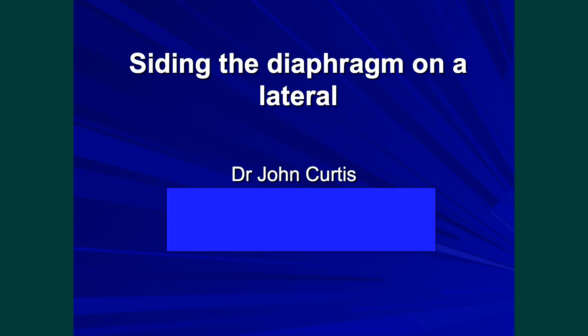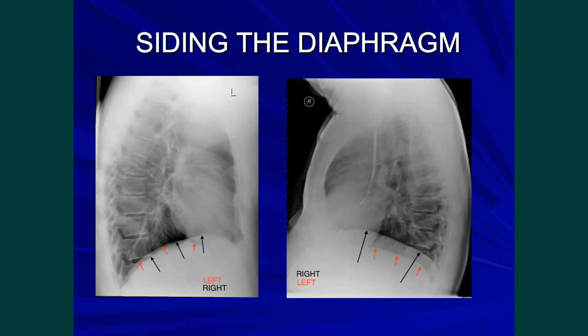At the end of this short talk you will be able to side the diaphragm on a lateral film. On the lateral film the right hemidiaphragm goes from back to front without being interrupted, and in this particular example is projected over the lowermost portion of the heart.